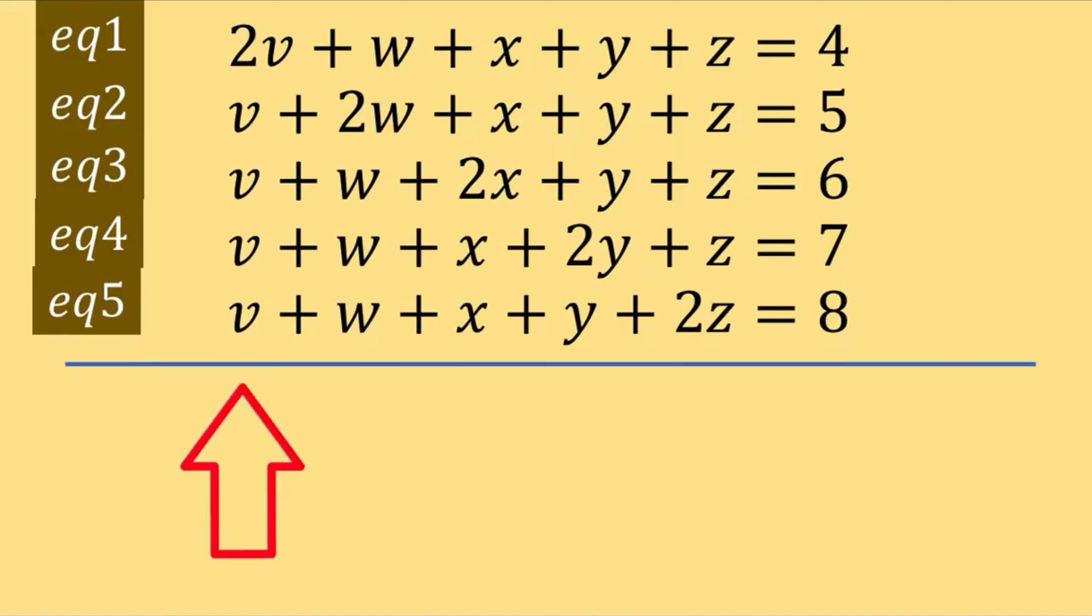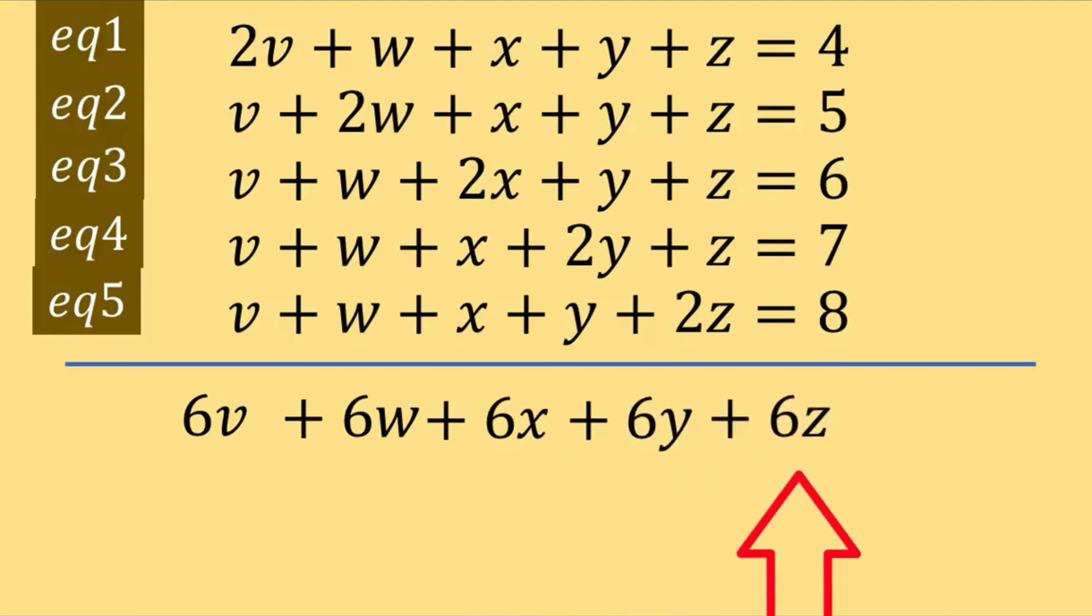If you're going to add all these equations vertically, like this, let's add 2v plus v plus v plus v plus v in the first column, we got 6v. Let's add also all the terms at the second column to get 6w. The third column is added to 6x. The fourth column is added to 6y. And the last column of the left side of the equation is added to 6z equals the sum of the right side, which is 30.